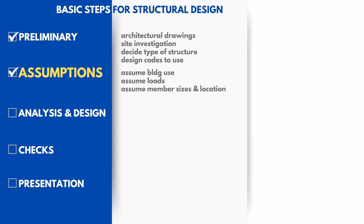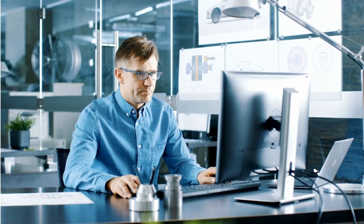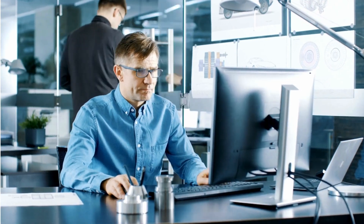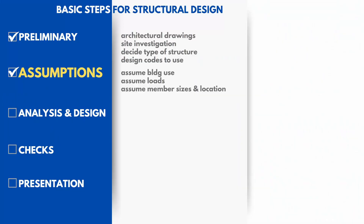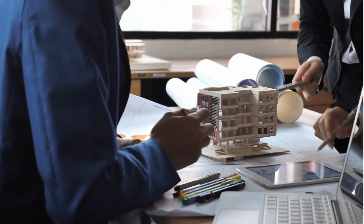Experienced engineers can identify correct member sizes, and this only develops after years of experience. If the initial assumptions prove wrong, the process will have to be repeated. As a good practice, I strongly suggest to review all of your assumptions, especially member sizes and locations, with the architect for a final confirmation.